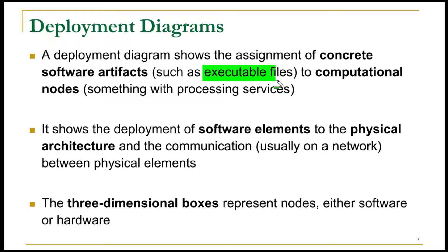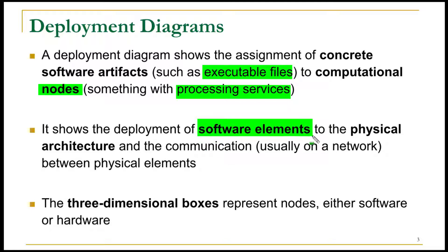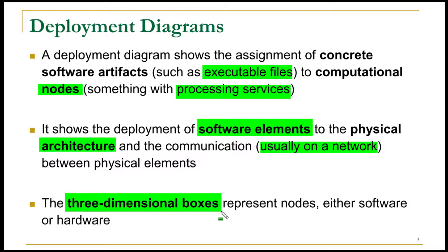More specifically, the deployment diagram is used to show the deployment of executable files. These executable files are deployed onto hardware which we call computational nodes, and those computational nodes provide the processing power or processing services to our executable files. With deployment diagrams we can show that our software elements are deployed onto some physical architecture and the communication is also shown. For example, if you want to show a representation of a client and a server connected using a network, you can use the deployment diagram. The three-dimensional boxes represent nodes — either software nodes or hardware nodes.